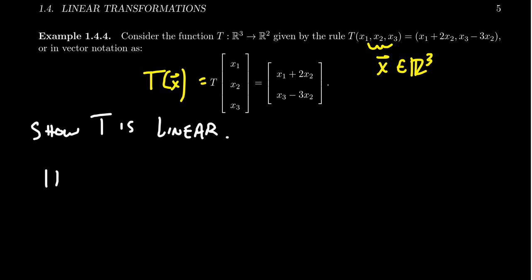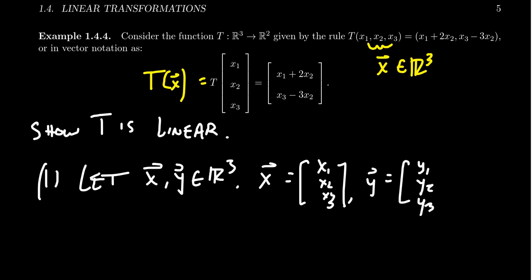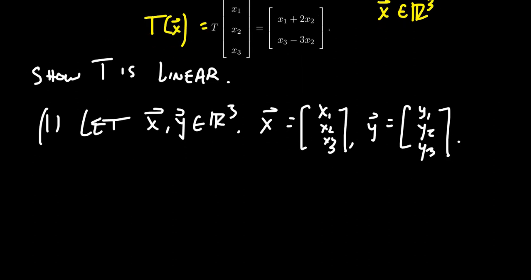We're going to take two generic vectors X and Y in R3. X has the form (X1, X2, X3) and Y has the form (Y1, Y2, Y3). We want to show that T of (X plus Y) equals T of X plus T of Y.